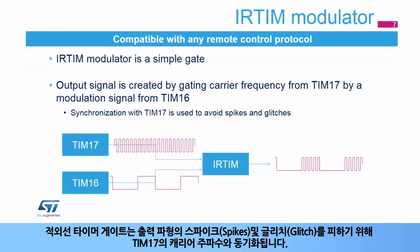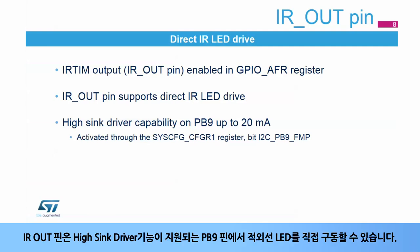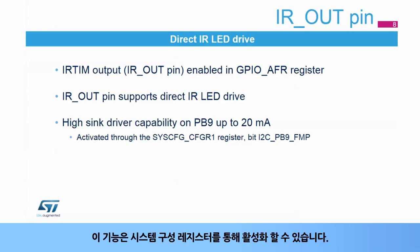To avoid spikes and glitches on the output waveform, the infrared timer gate is synchronized with the carrier frequency from timer 17. The infrared timer output is an alternate GPIO feature, configurable in the GPIO AFR registers. The IR out pin can directly drive the infrared LED, especially on pin PB9, where the high sink driver capability is supported. This feature can be activated through the system configuration register.